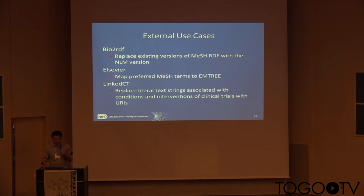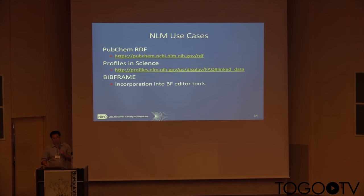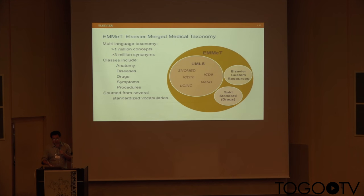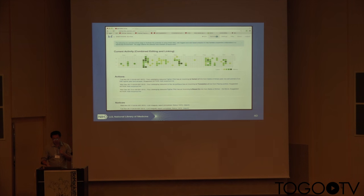In terms of external use cases, beta partners including Bio2RDF, Elsevier, LinkCT, and Mayo Clinic have all tested MeshRDF. PubChem RDF has already integrated with MeshRDF, enabling Medline indexing and pharmacological action annotations. In Elsevier's case, they integrated MeSH with other vocabularies — over 3 million terms and 1 million bio-concepts — supporting similarity search and entity verification. We also use a heat map to track MeshRDF usage via downloads and URI dereferencing, to see which resources are using MeSH.